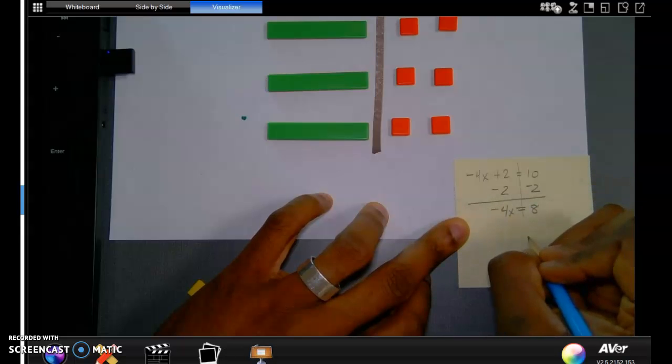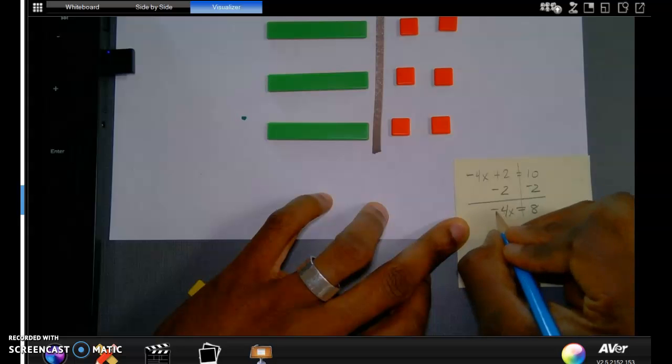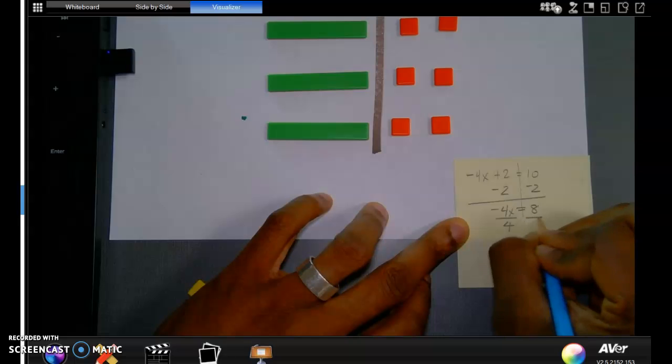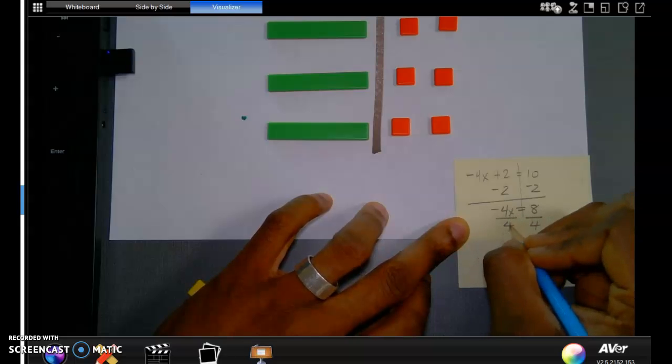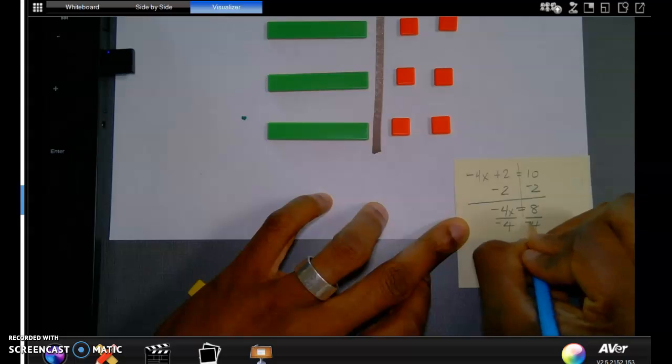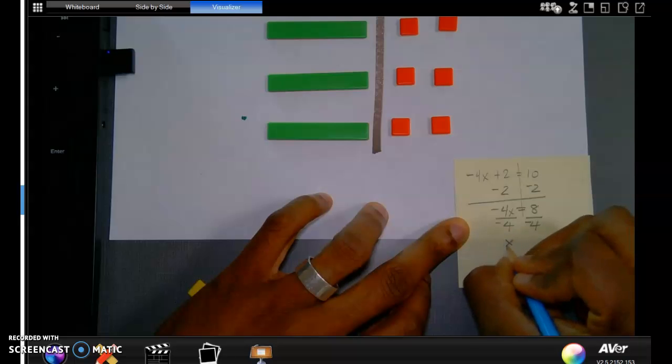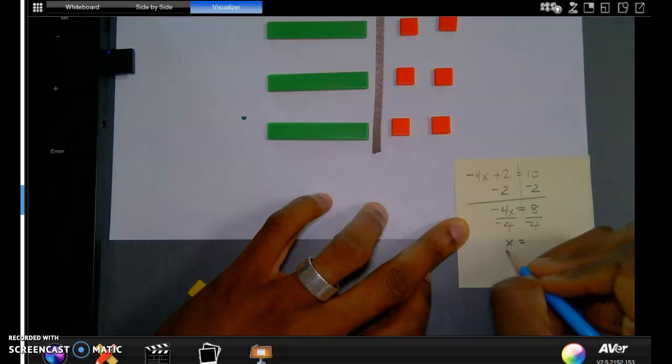I'm going to use the inverse operation here. Since I am multiplying, the inverse operation would be division. I know it sort of looks like a fraction—that's all that a fraction is, is division. I'm going to make sure that the signs are proper there. When I divide negative four x divided by negative four, that becomes positive x. My rules of division tell me a negative divided by a negative becomes a positive.